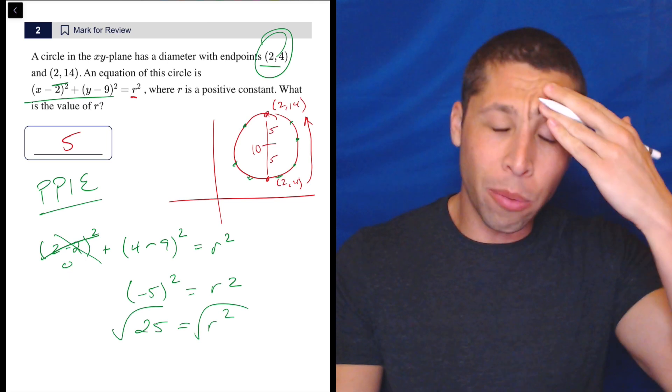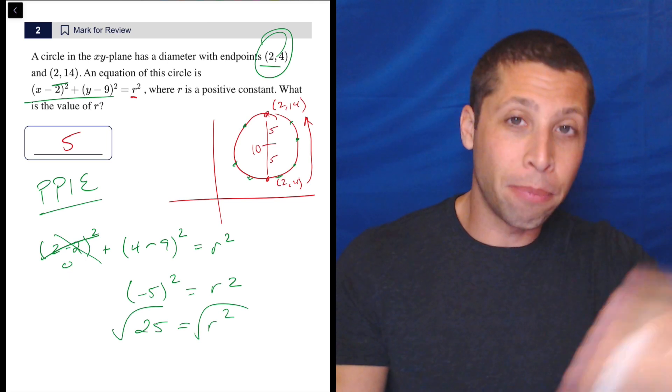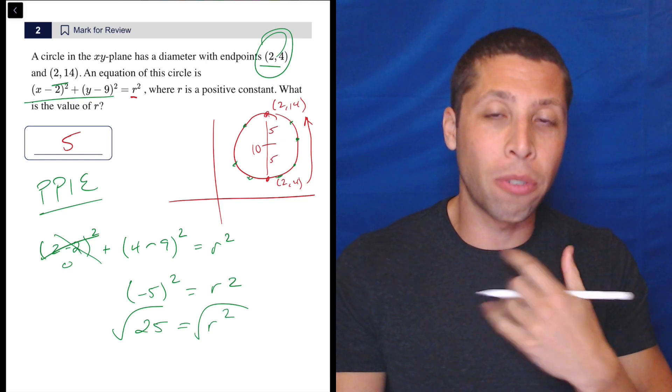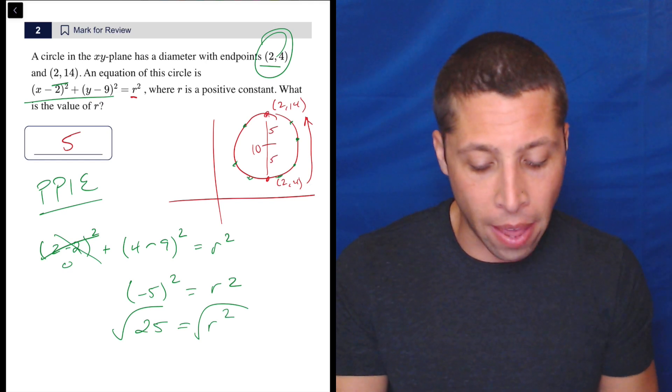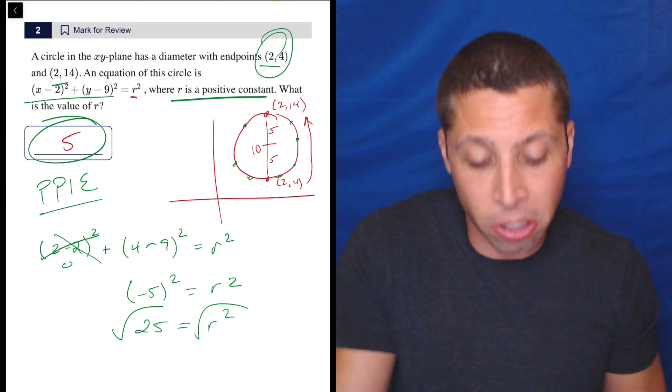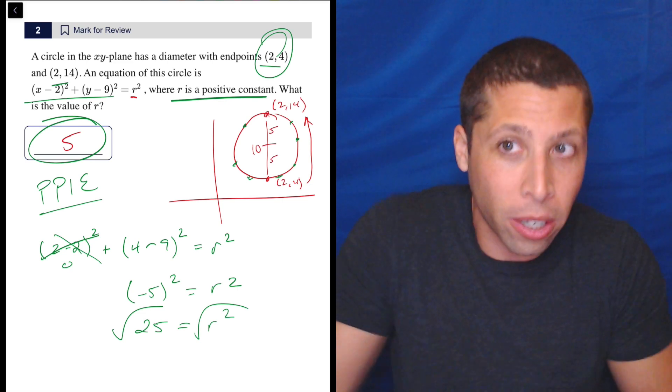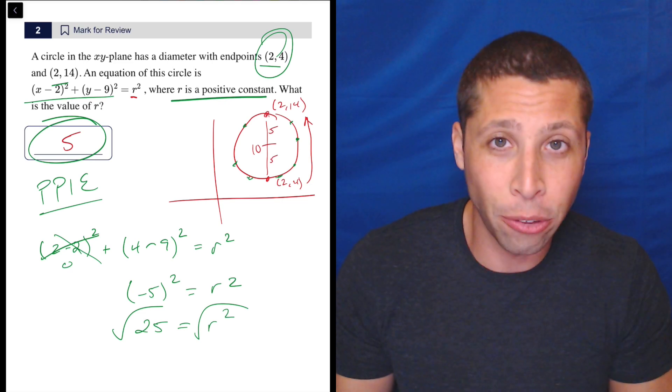And some of you are like, oh, but it could be positive or negative because of the square root. But again, no, just remember, it's a radius. It's a distance. So it's always got to be positive. And that's what it is. Plus, it says R is a positive constant. So even if you thought maybe the negative could work, just read the question and it tells you not.